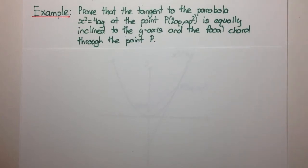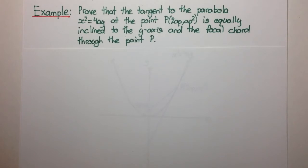Welcome to today's video. Proof that the tangent to the parabola x squared equals 4ay, at the point P with coordinates 2ap, ap squared, is equally inclined to the y-axis and the focal chord through the point P.